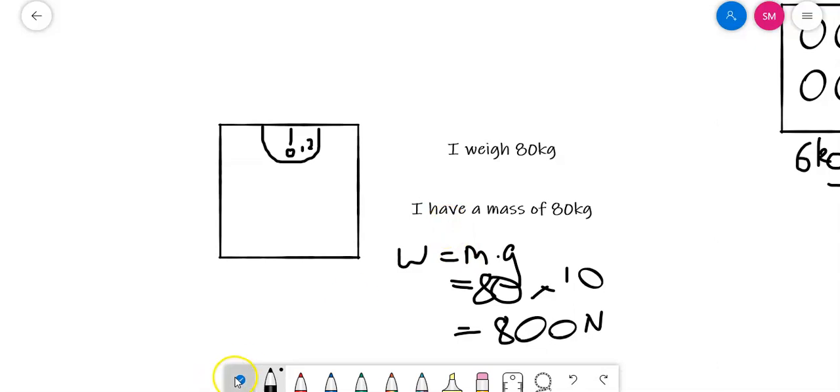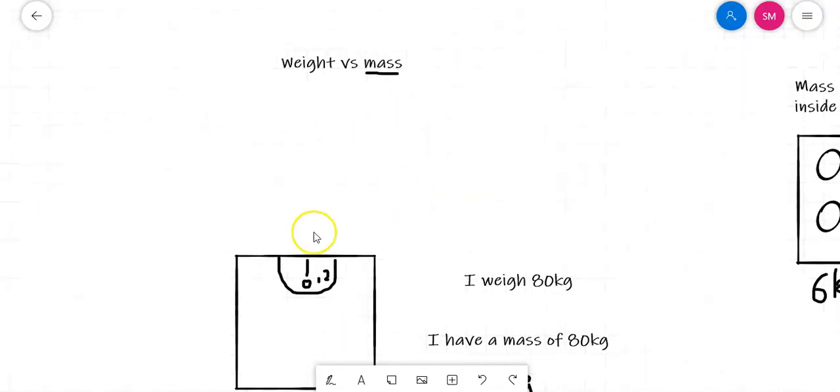That would be the correct scientific definition of weight, is the force on an object as a result of the effect of gravity. Thank you for watching this video. Like and subscribe for more Science 1.1 Mechanics videos. See you next time.